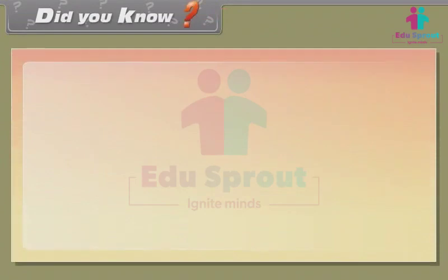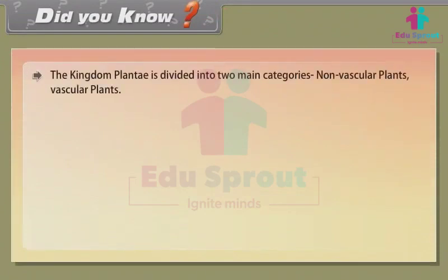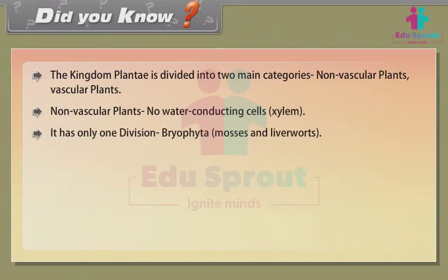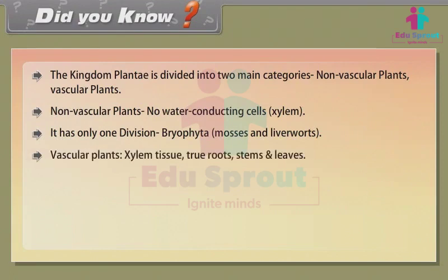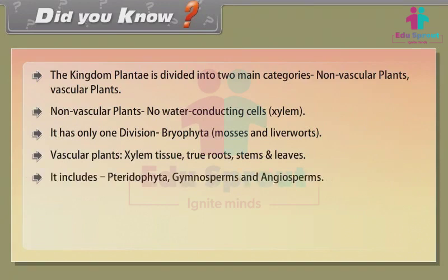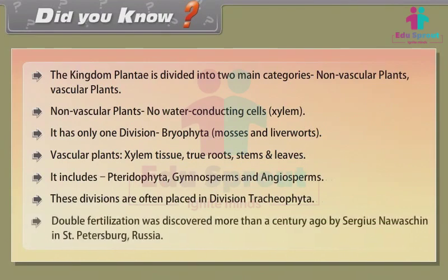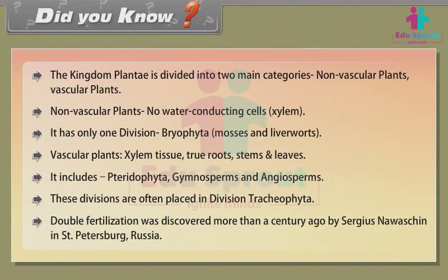Did You Know? The Kingdom Plantae is divided into two main categories: non-vascular plants and vascular plants. Non-vascular plants have no water-conducting cells (xylem) and include only one division — Bryophyta (mosses and liverworts). Vascular plants have xylem tissue, true roots, stems, and leaves; they include Pteridophyta, Gymnosperms, and Angiosperms, often placed under division Tracheophyta. Double fertilization was discovered more than a century ago by Sergius Navaschin in St. Petersburg, Russia.